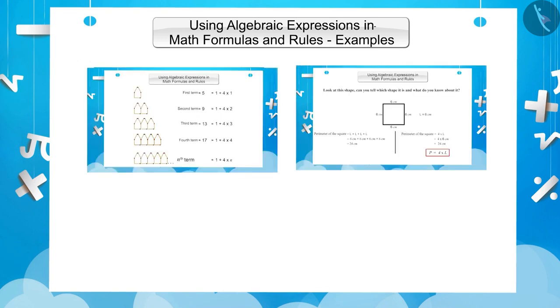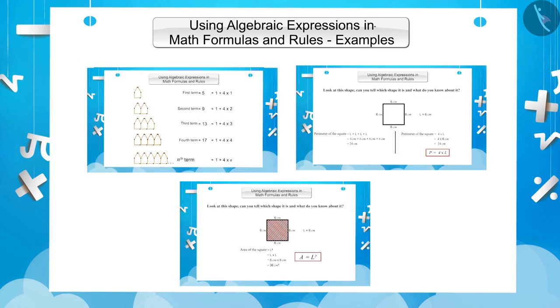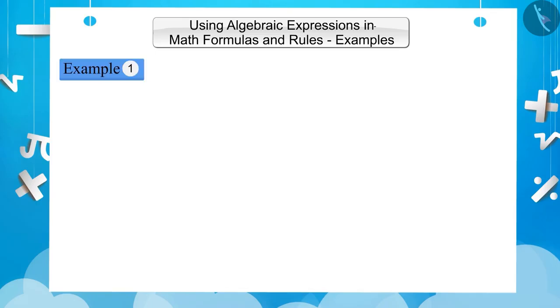Till now we learned about mathematical formulas and rules. In this video we will understand them better with the help of examples. Example 1: If the area of a rectangle is 20 square centimeters and its length is 5 centimeters, what will be its width?